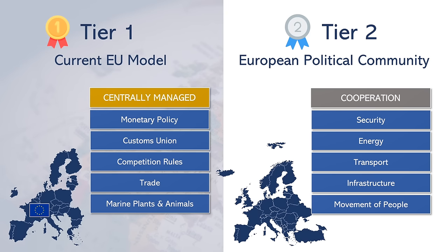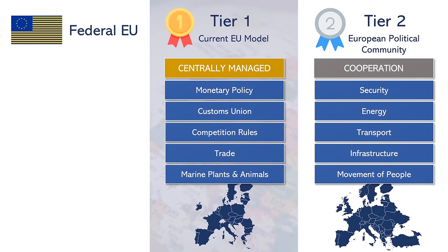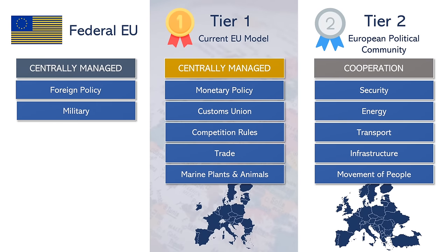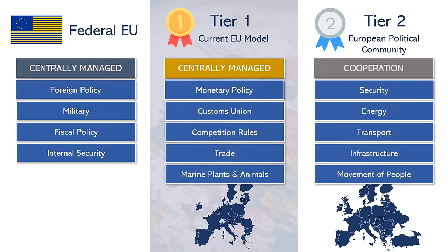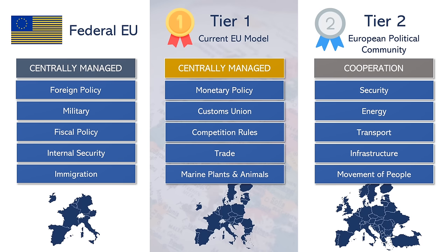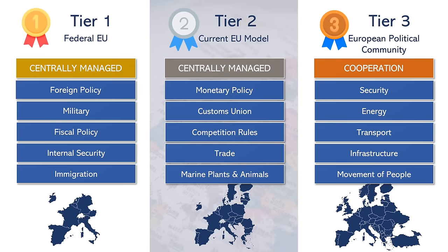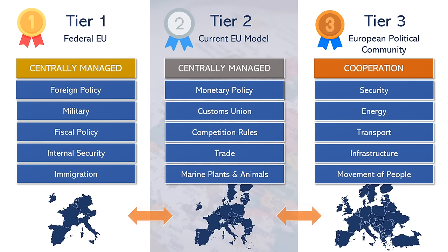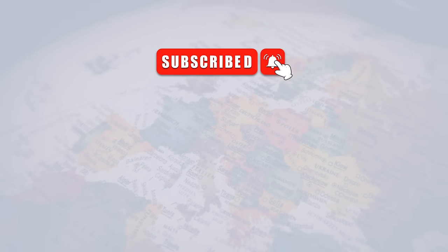I personally also like the idea of a third tier — a federal European Union for those who want it — where countries wishing for more integration in foreign policy, military, fiscal policy, internal security, and immigration could do so. With these three tiers, European countries could determine how much integration they want and move between tiers depending on what voters in their respective countries want. I find a multi-tiered Europe a fascinating topic and think this might be the most likely way forward. Let me know in the comments what you think about a federal EU. Thank you for watching.